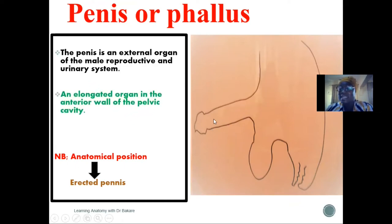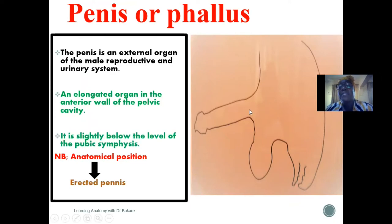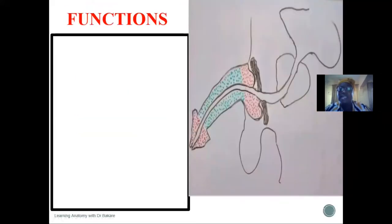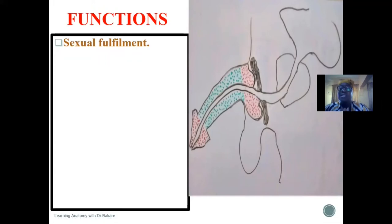The penis is elongated in anatomical position — the penis is supposed to be in an erect form, and any description of its different components will be related to it being in anatomical position. The functions of the penis: it helps in sexual fulfillment. It is a tool that is inserted into the female tract during copulation, striking sensitive regions of the female reproductive system to enhance sexual gratification.